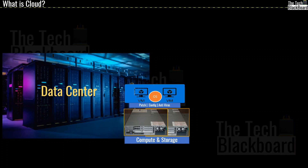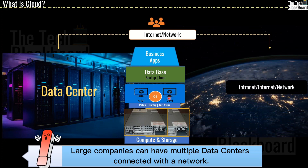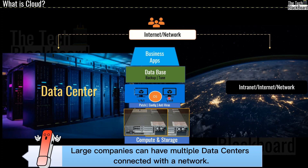Coming back to our data center example — until now we have mostly set up the hardware layer with compute and storage devices, and virtual machines with an operating system. The next level in building a data center is to bring a software layer. Let's build a database: we install a database to store business or transactional data. On top of that we need a business application as a front-end that provides an interface to deal with the database. Everything is connected via some kind of network — intranet or internet — so all users are connected to the database and the business application and can share files and data.